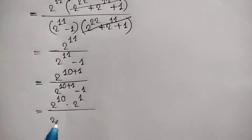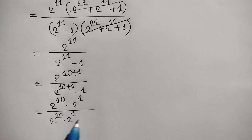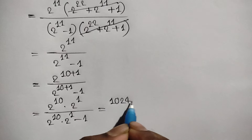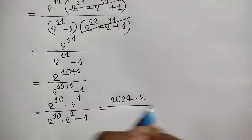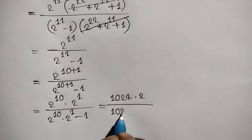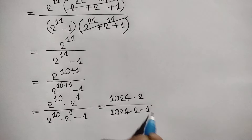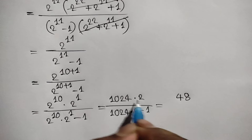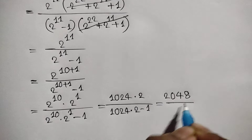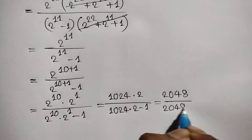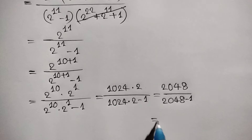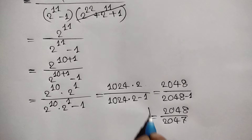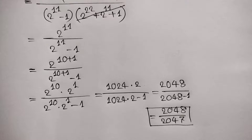We compute: 2 to the power 11 equals 1024 times 2, which equals 2048. The denominator is 2048 minus 1, which equals 2047. Therefore, the final answer is 2048 over 2047. If you like this video, please subscribe to my channel and see you in the next video, bye bye.